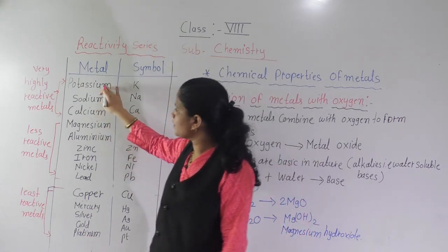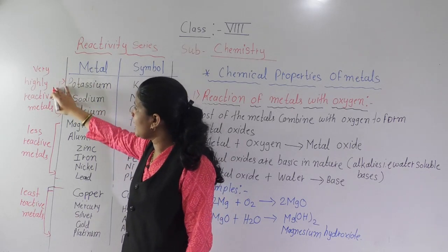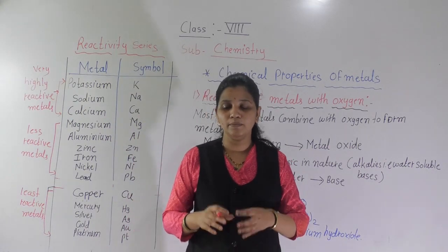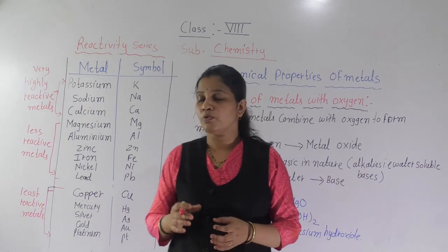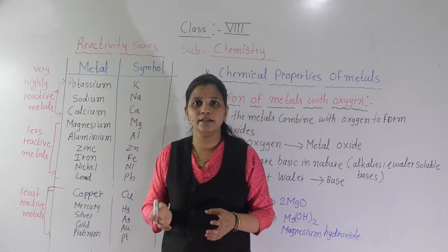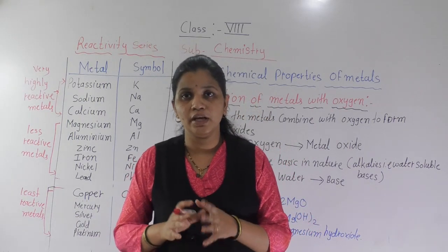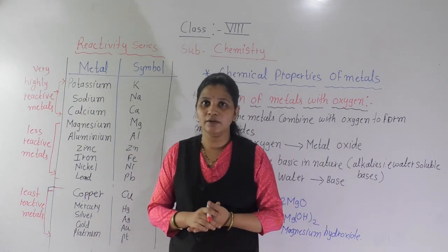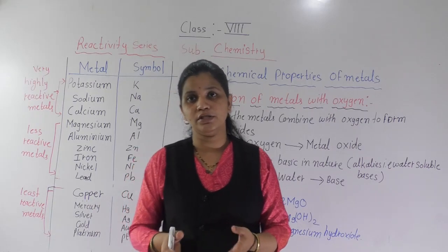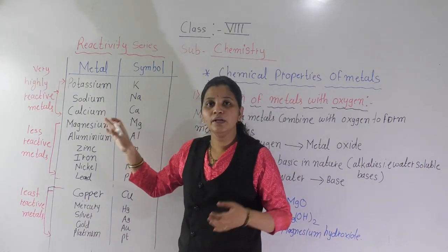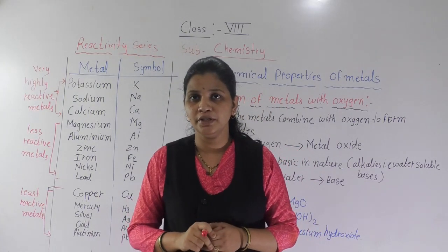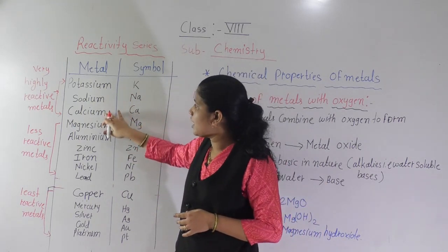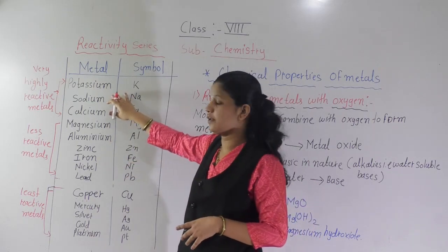In this reactivity series, potassium, sodium, and calcium are very highly reactive metals. These three metals are very highly reactive — if you keep them in open space, they start burning. Mostly sodium and potassium are kept in kerosene. Why? Because they are highly reactive with oxygen and water. In our surroundings, many gases are present including oxygen. So if you keep them outside, they start burning. Because of that, we keep these highly reactive metals in kerosene.